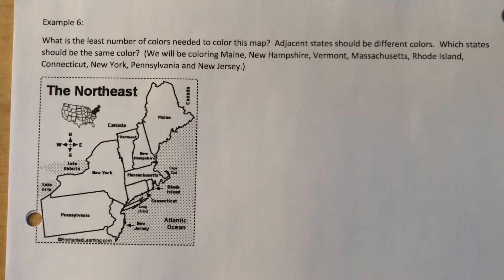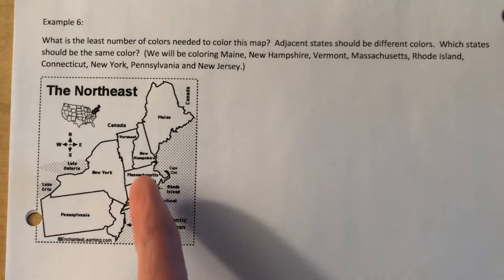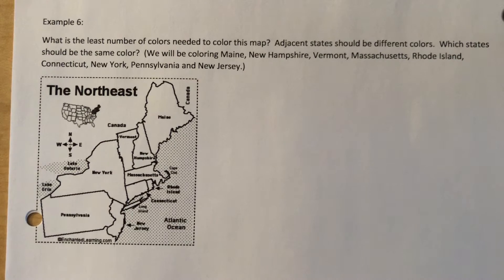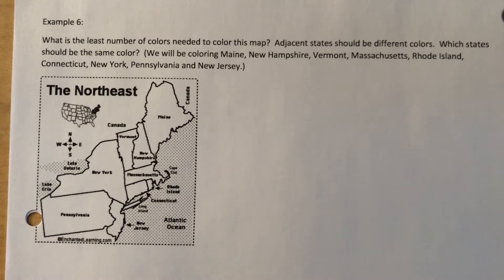Let's do one with a map. These are fun. What's the least number of colors needed to color this map? Adjacent states should be different colors, otherwise they'd run together and you'd be like 'New Hampshire, Vermont, they're all one state because they're all one color.' We're not going to color Canada, we're not going to color the states down here like Maryland and the others that border Pennsylvania.